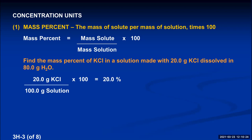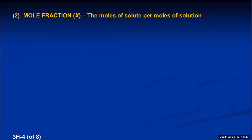Mass percent is not that convenient for chemists because chemical reactions occur on a molecule-to-molecule basis, and we need to know how many molecules are in a sample to do quantitative work. Something proportional to the number of molecules is moles. So we come up with a fraction called the mole fraction — the moles of solute per moles of the entire solution. The abbreviation for mole fraction is the Greek letter chi, which fortunately looks like an X.